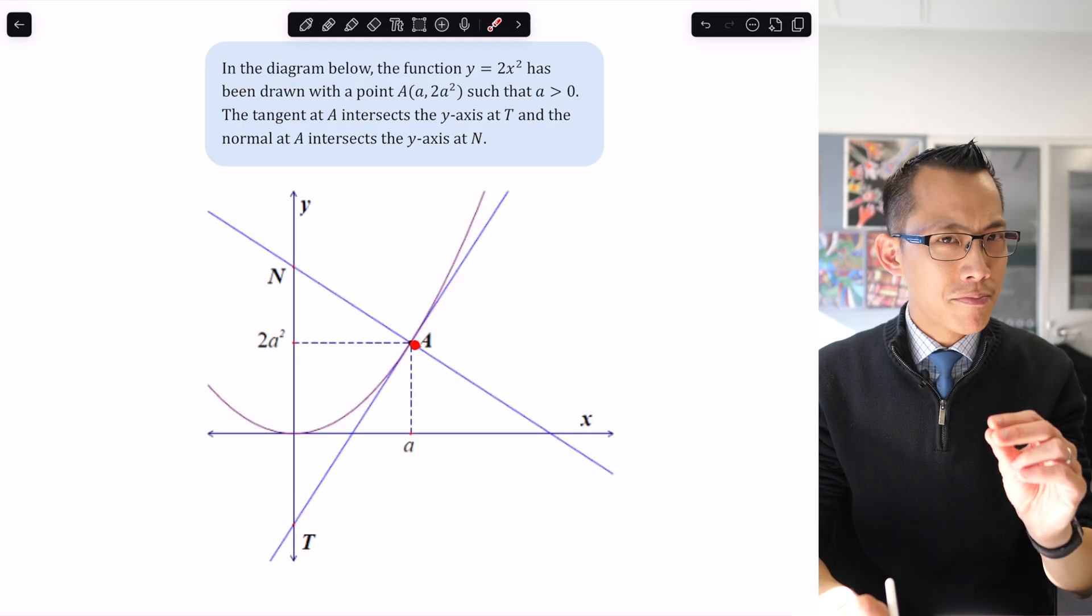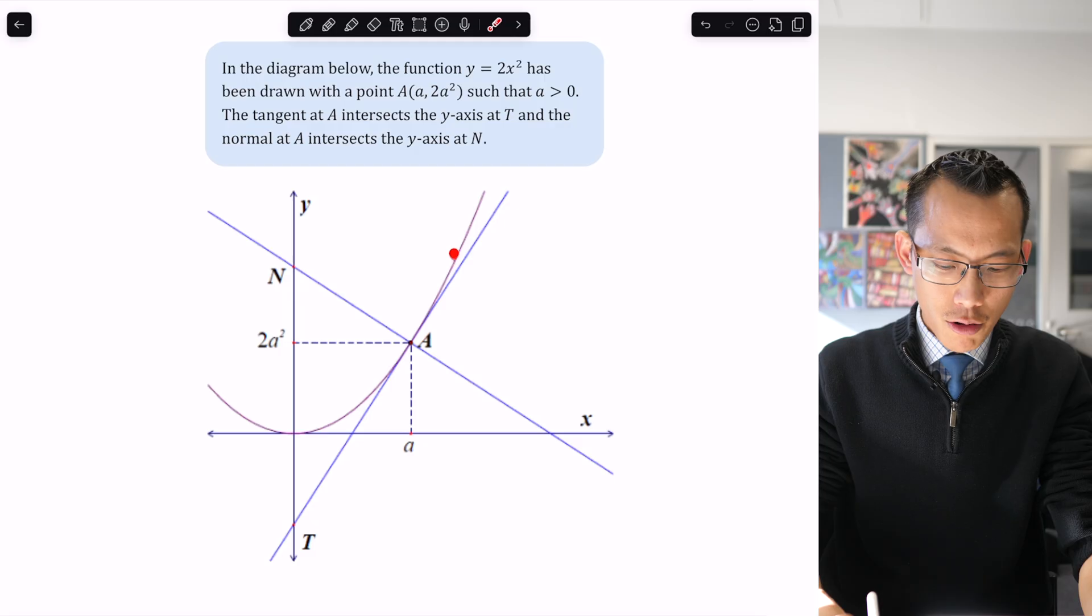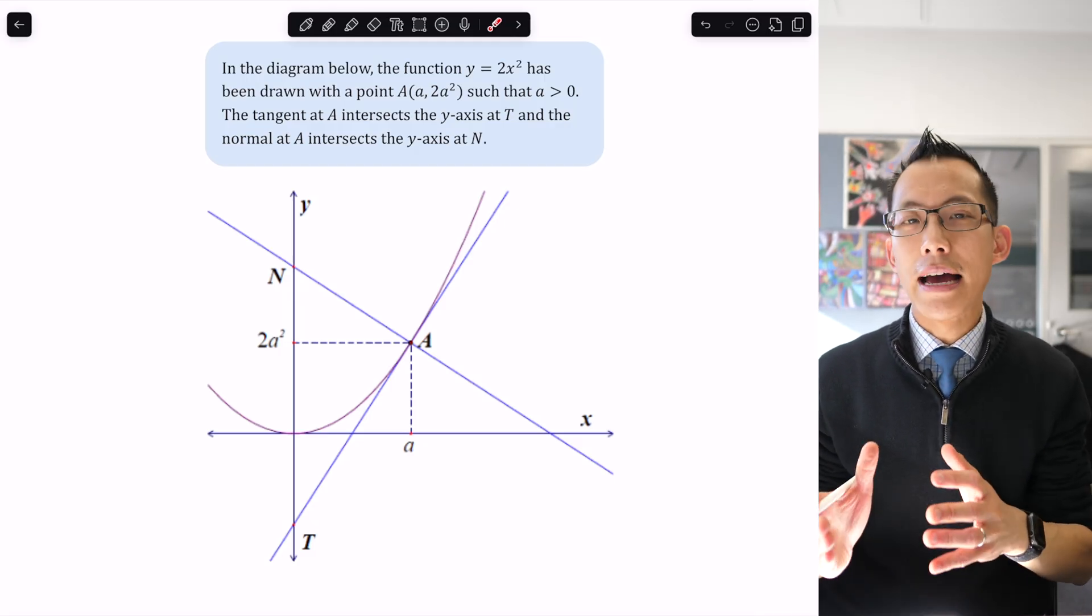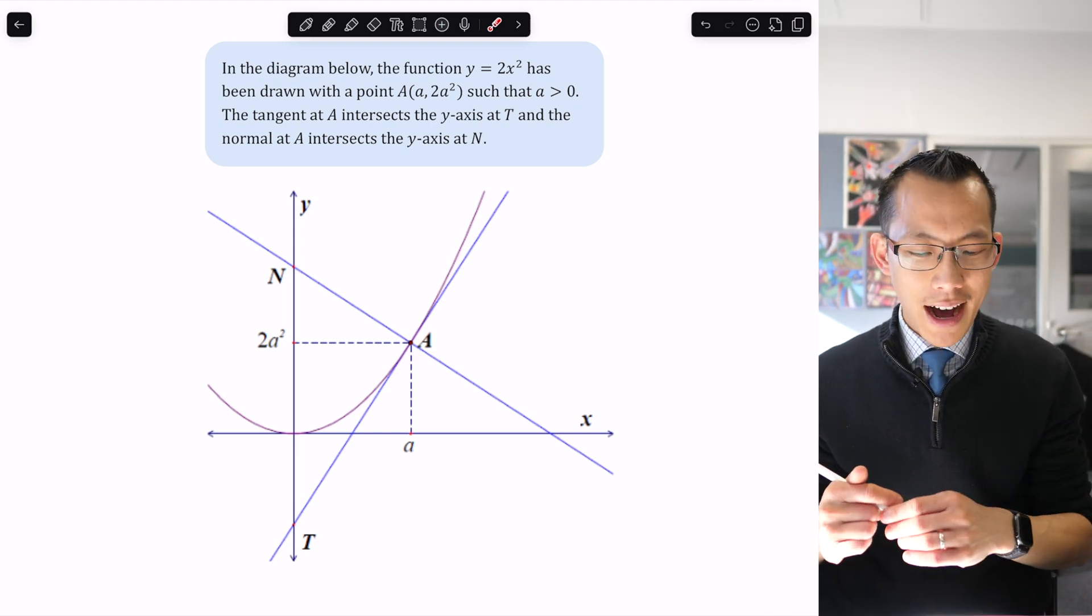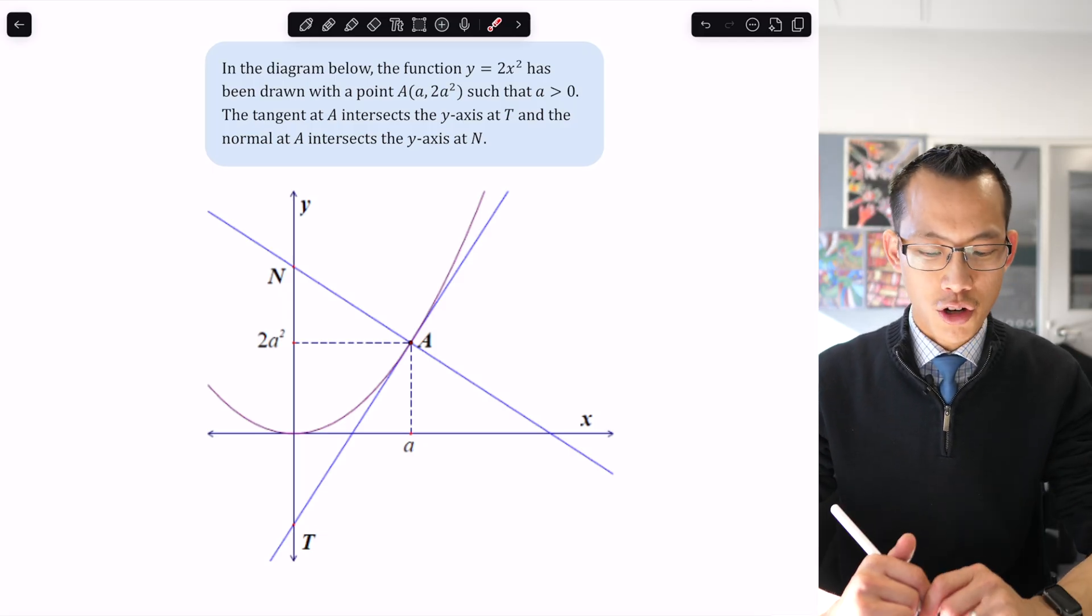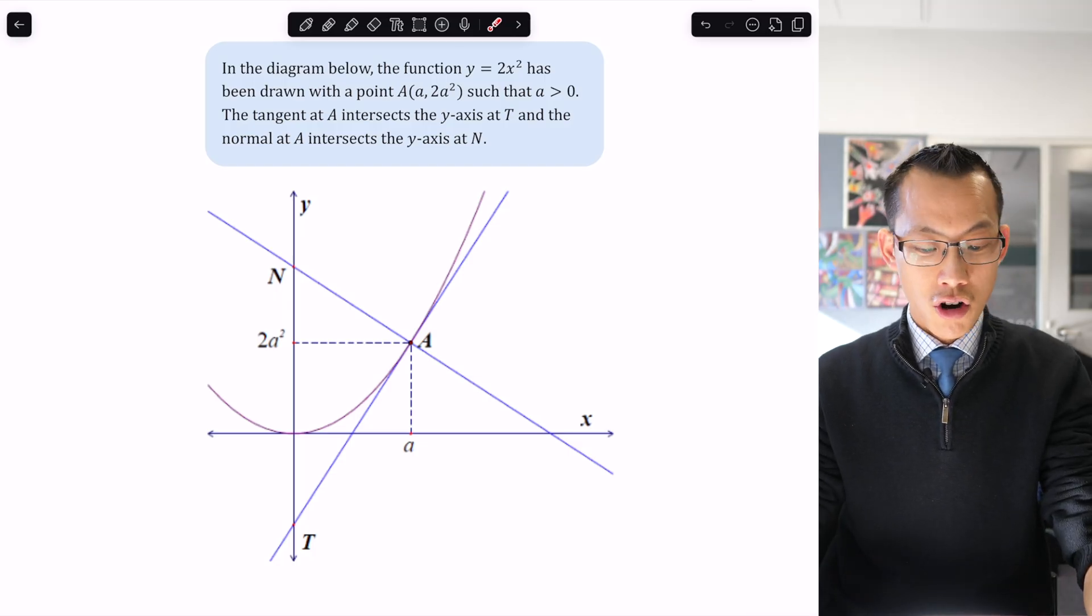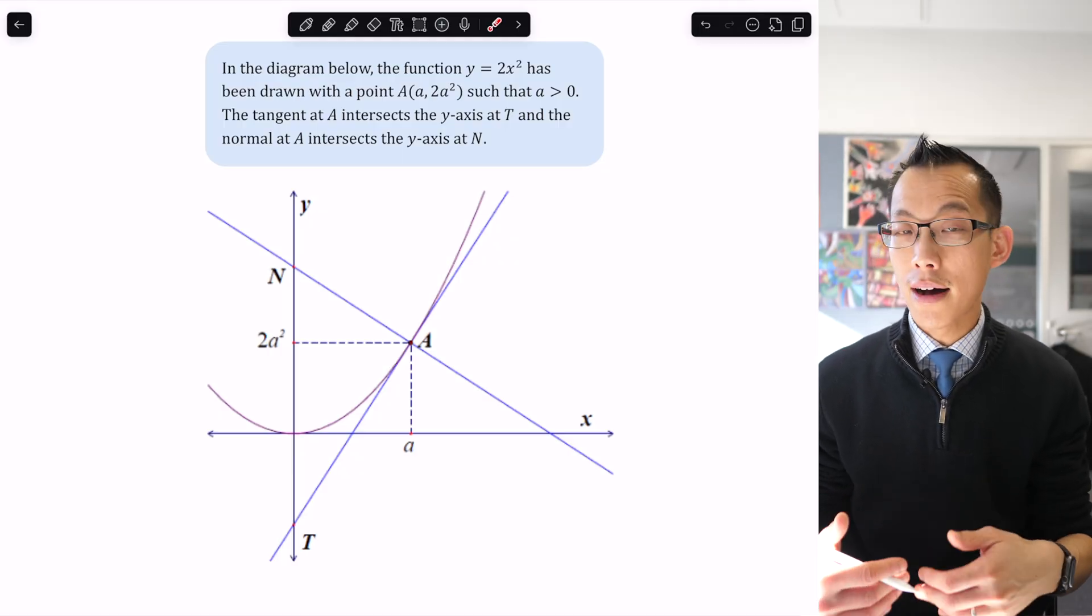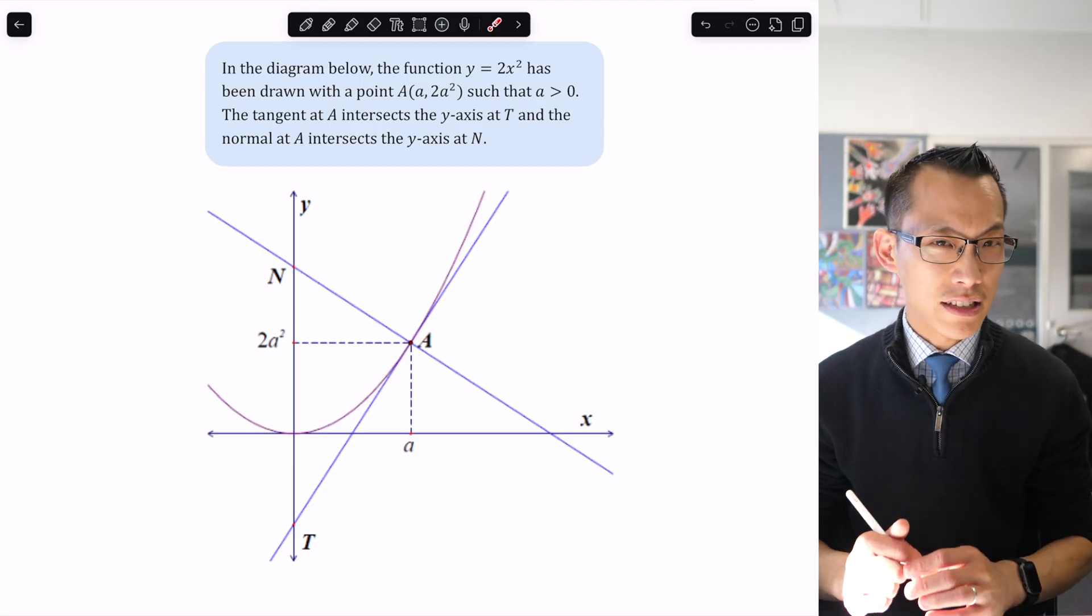This inequality implies that point A can move. Point A doesn't have to be at exactly this location - it could be here or here or here. Point A has to be on the parabola but can occupy different places. This makes the question algebraically complicated because if we had coordinates like (1, 2), everything would be arithmetic and much simpler.